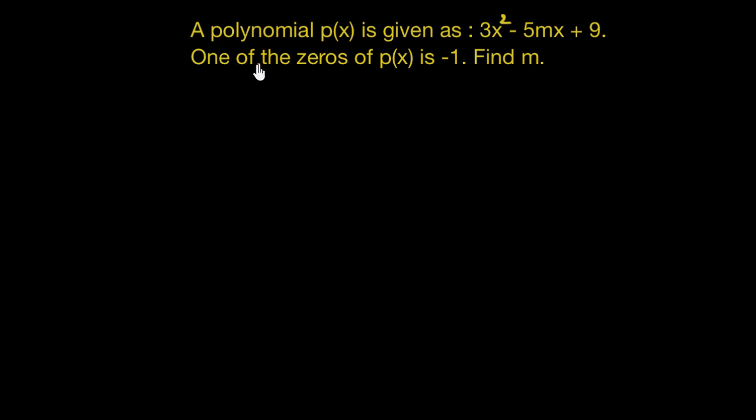A polynomial p of x is given as 3x squared minus 5 times m times x plus 9. One of the zeros of p of x is negative 1. Find m.